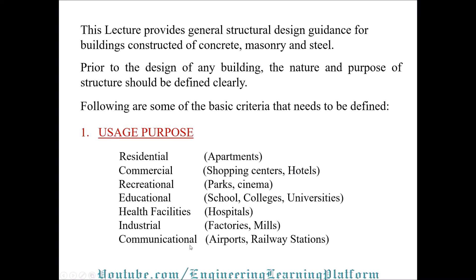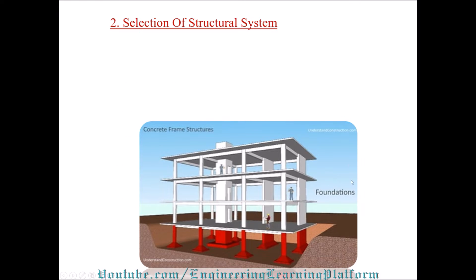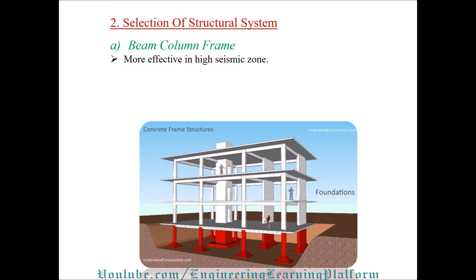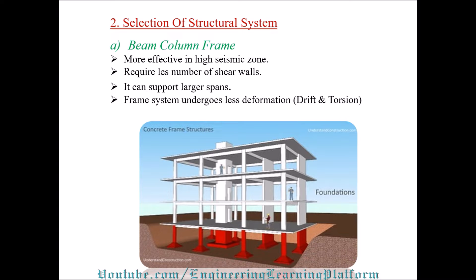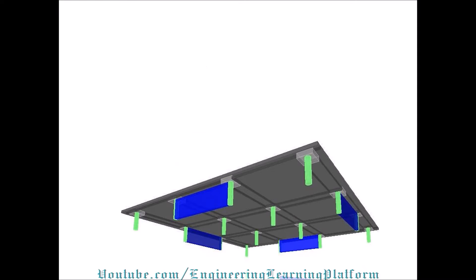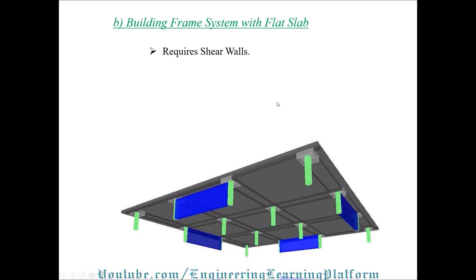The second criterion is selection of structural system. Part A is the beam-column frame system. It is more effective in high seismic zones, requires fewer shear walls, can support larger spans, and undergoes less deformation or drift.